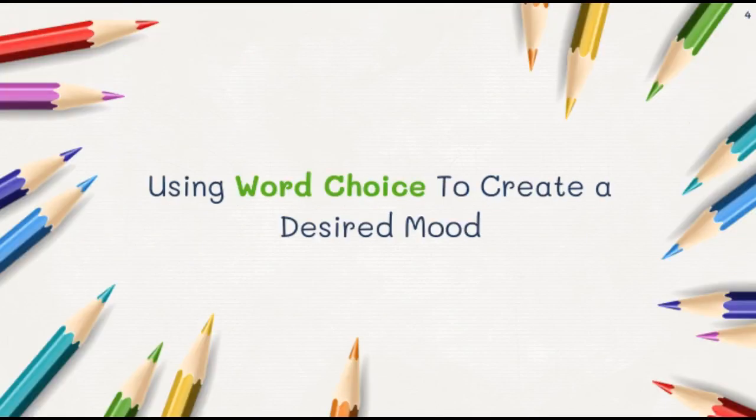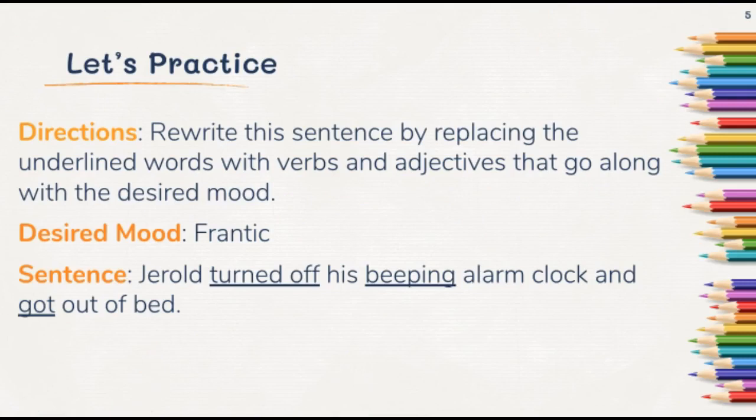Using word choice to create a desired mood is the first technique we're going to tackle today. I want you to practice this by rewriting a sentence, replacing the underlined words with verbs and adjectives that go along with the desired mood.